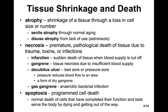Infarction is sudden death of tissue where blood supply is cut off, like myocardial infarction or heart attack. Gangrene is tissue necrosis due to insufficient blood supply. Decubitus ulcers — bed sores or pressure sores — are a form of necrosis that reduces blood flow to an area and are a form of dry gangrene. Gas gangrene results from anaerobic bacterial infections. Apoptosis is programmed cell death — cells dying at the appropriate, pre-programmed time. It is the normal death of cells that have completed their function and best serve the body by dying and getting out of the way.